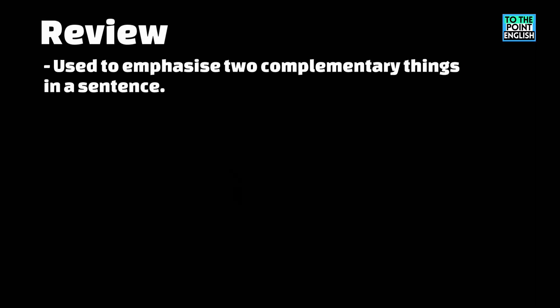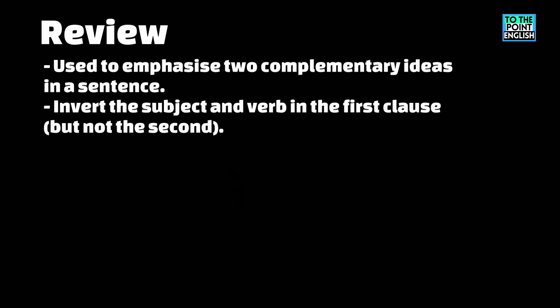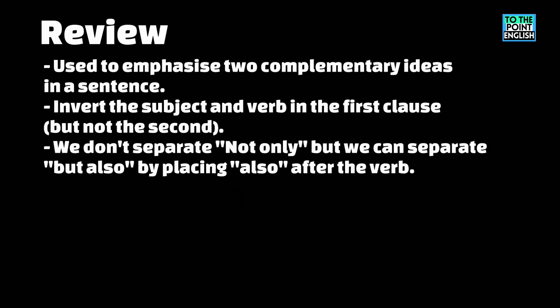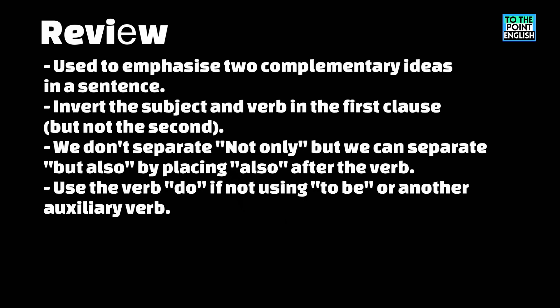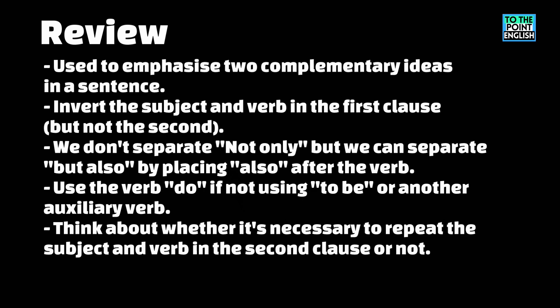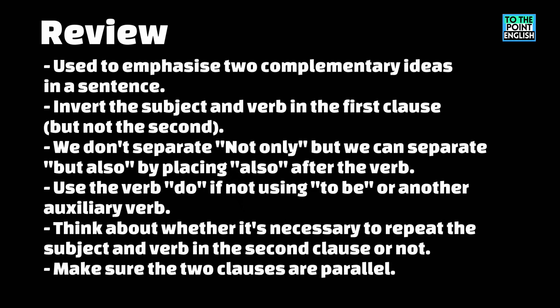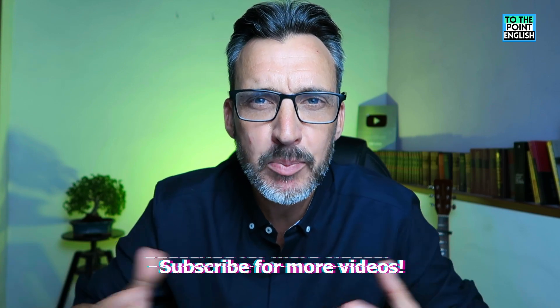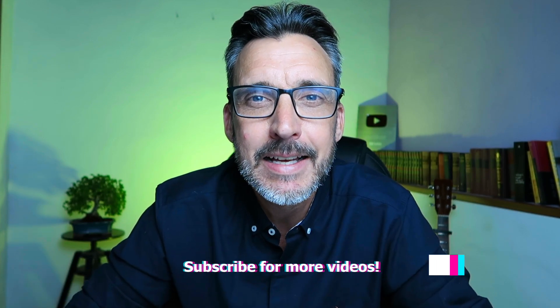So there is a lot to think about. Let's review the six main points: one, use this structure to emphasize two complementary things — both positive or both negative; two, invert the subject and main verb in the first clause, but not the second; three, do not separate 'not only', but you can separate 'but' and 'also' by placing 'also' after the verb; four, use 'do' if not using 'to be' or another auxiliary; five, think carefully about whether to repeat the subject and verb in the second clause; six, make sure the two clauses are parallel. Practice and come up with your own examples — share them in the comments!